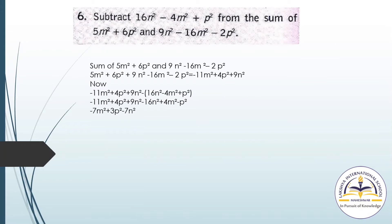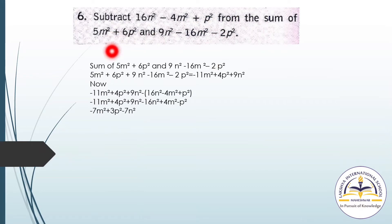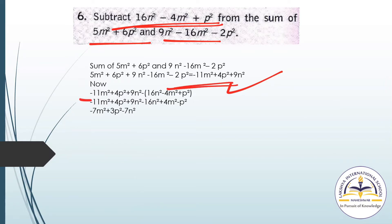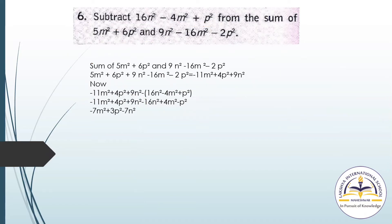Question number 6: Subtract 6n² minus 4m² plus p² from the sum of 5m² plus 6p² and 9n² minus 16m² minus 2p². First, find the sum of these two expressions. Then subtract 6n² minus 4m² plus p² from that answer. You get 11m² as part of the answer. Then subtract the given terms to get the final result.